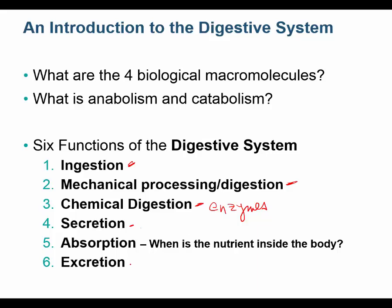Excretion is when you get rid of unabsorbed material - it doesn't even have to be waste; it could be something good that you didn't absorb. You don't always absorb everything good that you eat; some passes through. That's excretion - getting rid of unabsorbed material. What we're really talking about is digesting foods and absorbing the nutrients to build the four biological macromolecules.